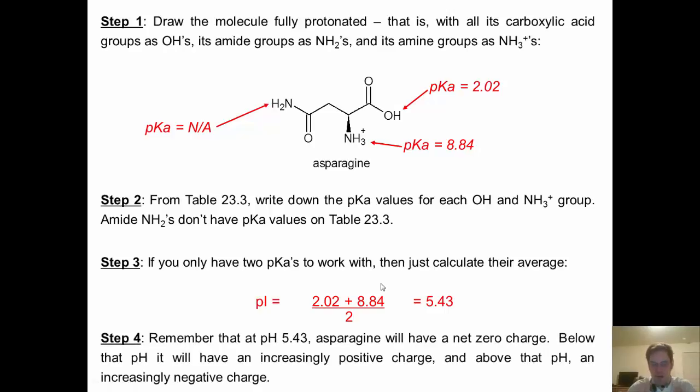Step 4. Remember what that number actually means. It means that at pH 5.43, asparagine will have a net zero charge. What that means is that right at that pH 5.43, asparagine will have an NH3+ here, and an O- over here. So it will have a net zero charge. Below that pH, we'll start to see the O- getting protonated. So we'll start to see it look like this form. It will have a net positive charge. Above that pH, we'll start to see more and more NH3+ get deprotonated, give neutral NH2s, with O-s being here, giving us a net minus one charge.